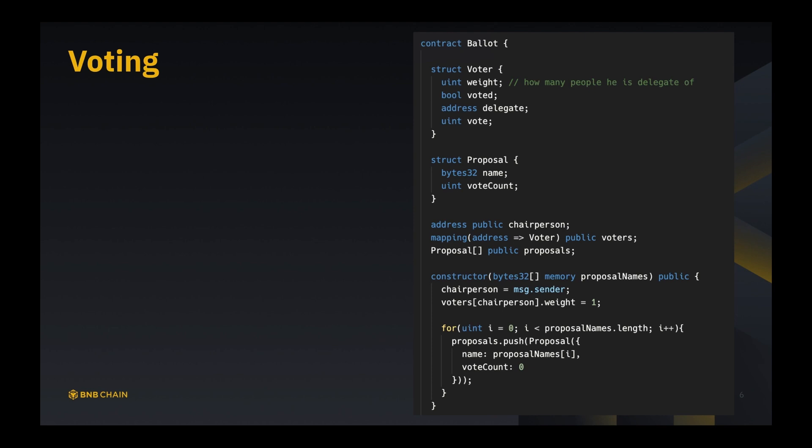Then we have a structure called Proposal that stores the name and current vote count of a proposal. We have state variables chairperson and voters. Chairperson is the administrator, very similar to the minter and author in the previous two contracts. Voters is very important because a general account on the BNB chain is not going to contain the information we need.